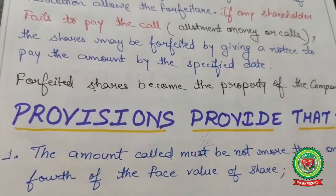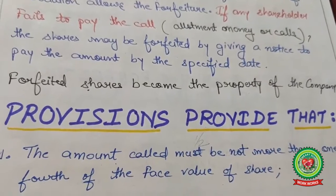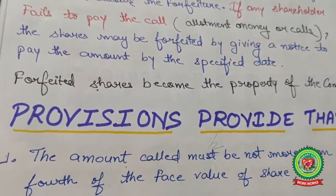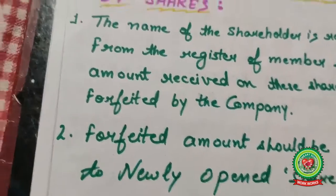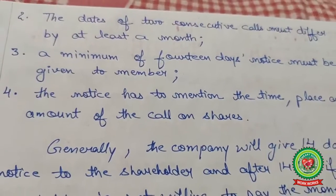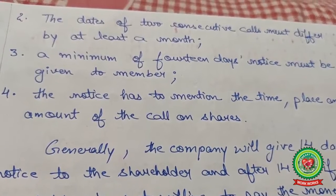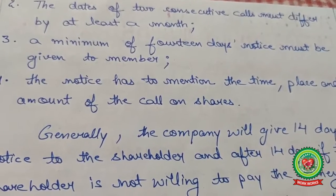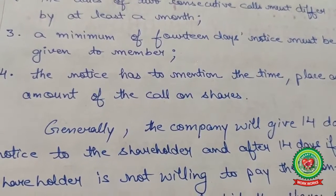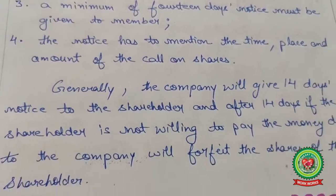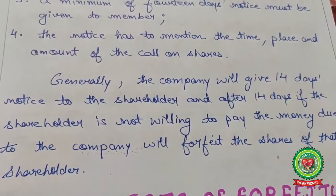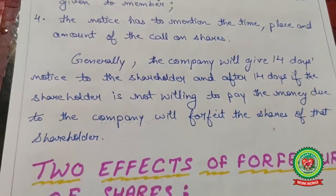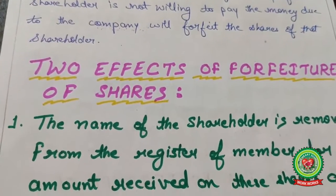The provisions state that the amount called must not be more than one-fourth of the face value. The date of two consecutive calls must differ by at least one month. A minimum of 14 days notice must be given to the member, and the notice must mention the time, place, and amount of the call. Generally, the company gives 14 days notice; if the shareholder still does not pay after that, the company will forfeit the shares.